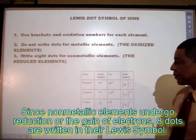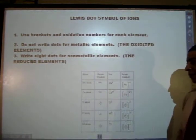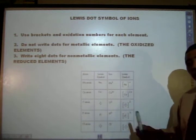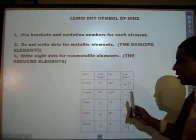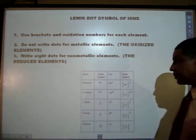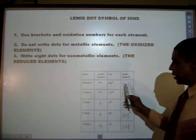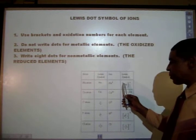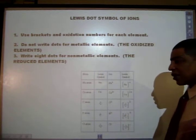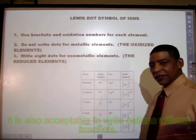For example, for the element sodium — Na — which is a metallic element, the Lewis dot symbol for sodium contains no dots. Na is written inside of brackets, and the oxidation number or charge is written outside of the brackets.